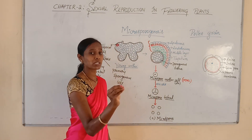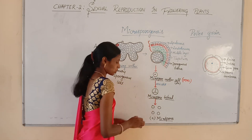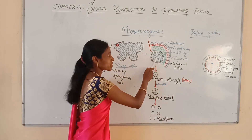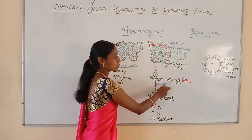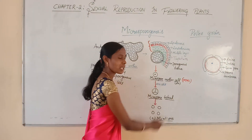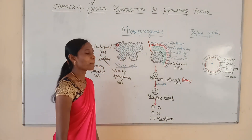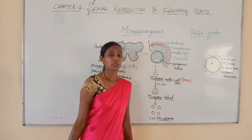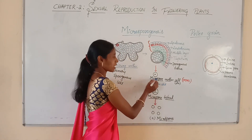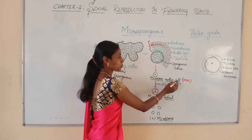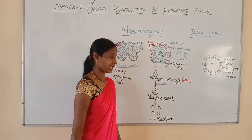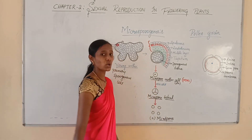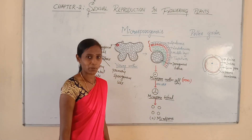Each sporogenous cell later develops into a microspore mother cell, which can also be called a pollen mother cell. The mother cells are usually diploid in nature, and the microspore mother cell is also diploid. This microspore mother cell usually undergoes meiotic cell division.